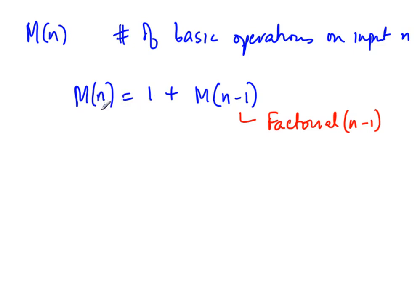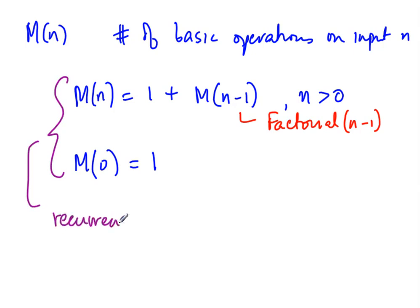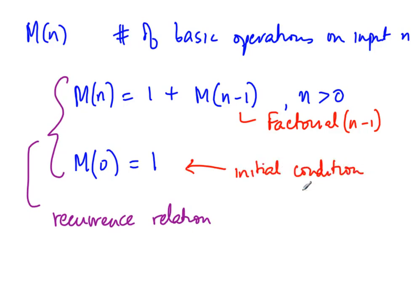We have basically converted a recursive definition of the function into a kind of recursive definition of the complexity function. We need one more fact: if n is 0, M of 0 is 1 — that is, if n is 0, we just do one check and directly return 1. Together this is called a recurrence or recurrence relation. This second part is called the initial condition or the base case. Without specifying the base case, you may not have a unique solution, and changing the base case will change your final answer.